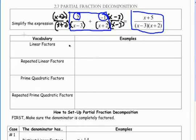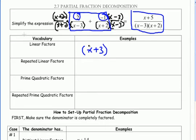Before we do anything, we've got to go over some vocabulary. The vocab is not very intense — there are a lot of words you've seen before, but we need to know these so when we talk about the different cases, you know what we're talking about. The first term is linear factors. For example, x plus 3 is linear because it has degree 1. Another example is 2x minus 1 — again degree 1, making it linear. These are linear factors.